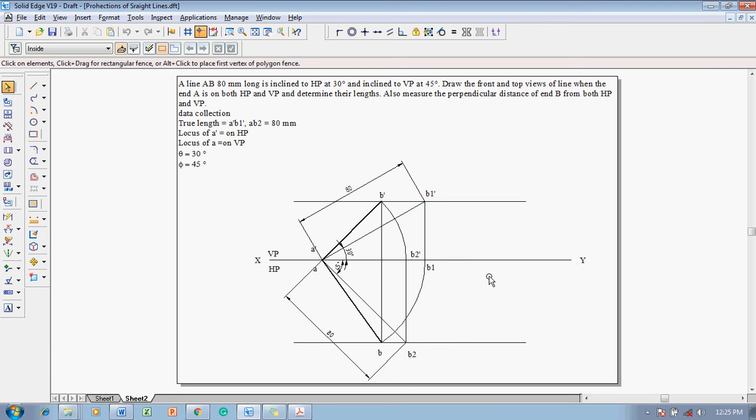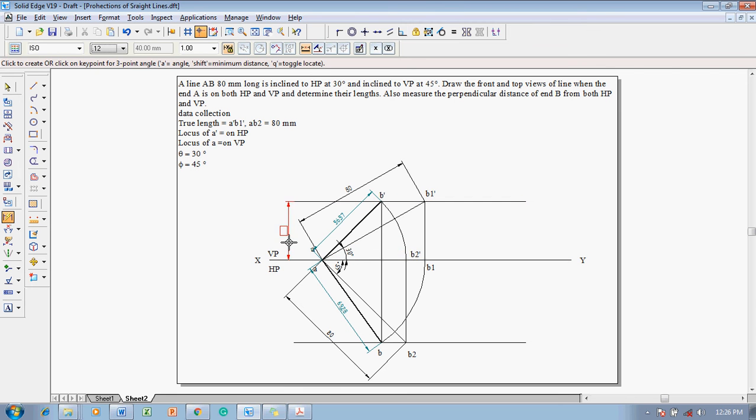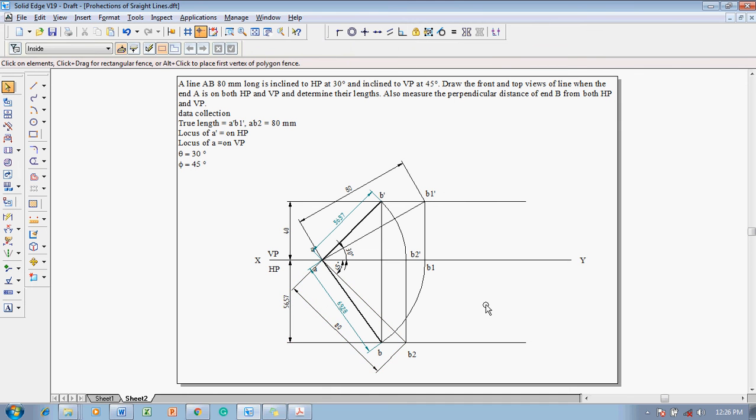We need to measure some parameters. What are the parameters to be measured? They are asking to determine their lengths. What means their lengths? The front view and top views. Using the smart dimension, measure the distance between A dash to B dash and then AB like this. Determine their lengths. The front view length and top view length has been measured. Also measure the perpendicular distance of B from both HP and VP. Go to smart dimension command. The distance of B dash with HP is this height. In the same fashion, the distance of B2 to this line is the distance from VP. These two dimensions must be measured and shown.